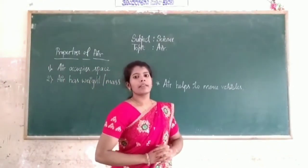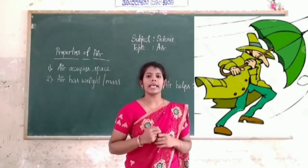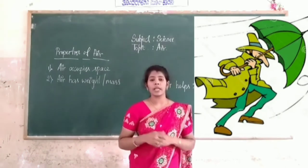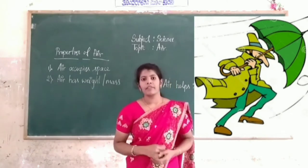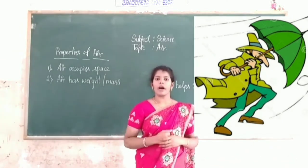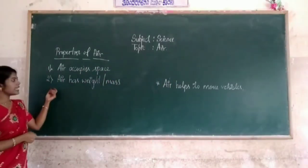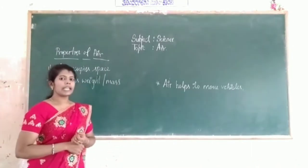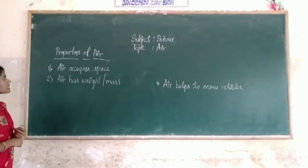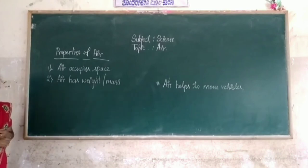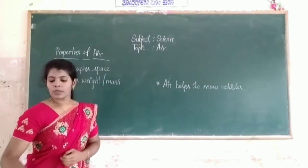Sometimes when we are moving on the road, a strong wind comes from one side. What happens? The wind pressure moves us. We felt that we are moving in a forward direction. This shows that the second property — air has weight or air has mass. Which are the properties of air? There are two properties. One is air occupies space. The second one is air has weight or mass.